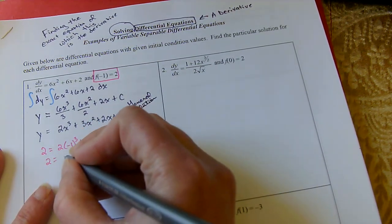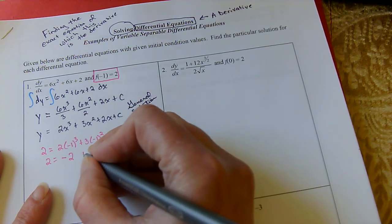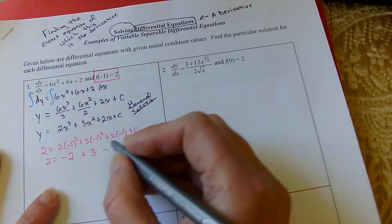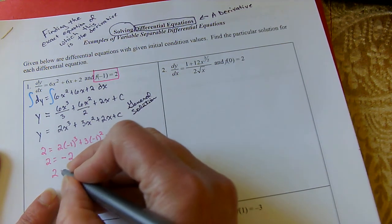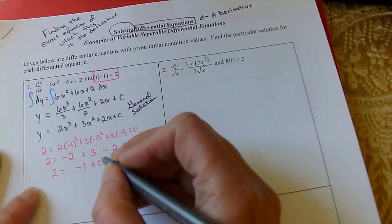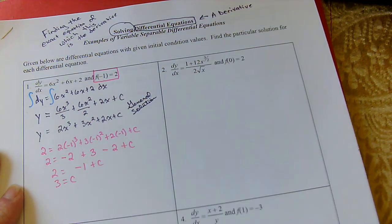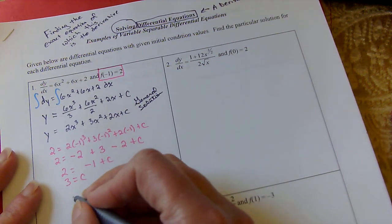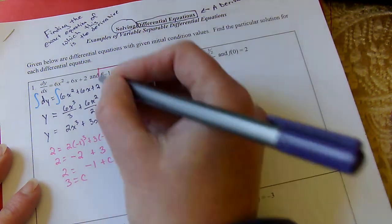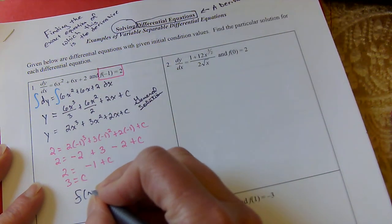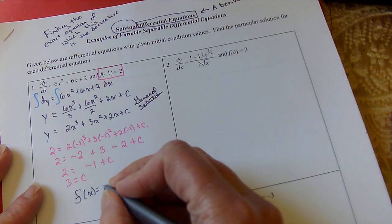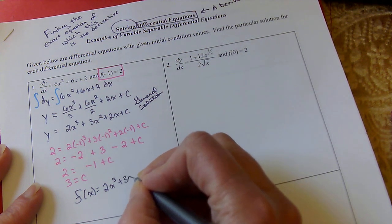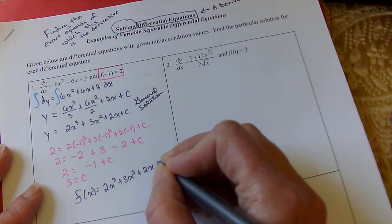Negative 1 cubed is negative 1. Negative 1 squared is positive 1. This would be negative 2 plus c. That gives me negative 4 plus 3, which is negative 1 plus c. So c is 3. Now that we have that information, we know our specific solution, and they call it f of x. So f of x is 2x cubed plus 3x squared plus 2x plus 3.